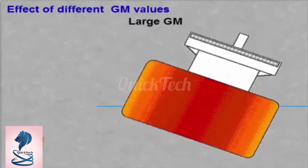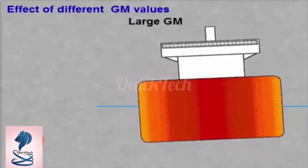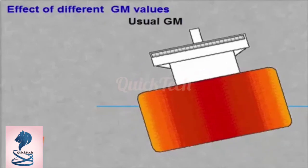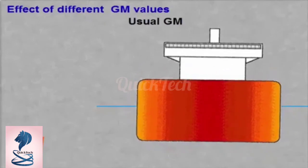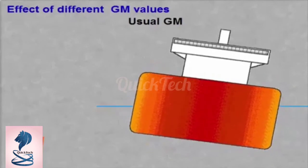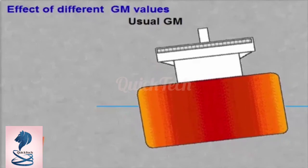A GM that isn't very high or too small causes less strain on the cargo and equipment lashings and the ship in general. The rolling is slower and the movement more gentle.